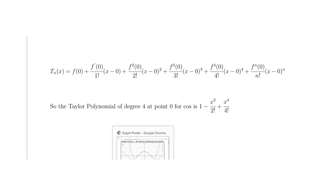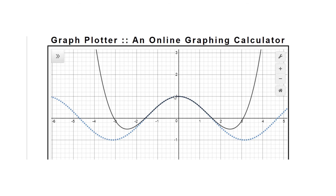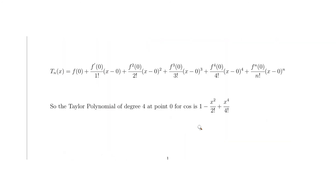To verify the result, we can look at a graph. At x equals zero, both curves center around 1, confirming accuracy at our point of interest. The solid black line is our Taylor polynomial and the dotted line is the real cosine graph. They stay very close near zero and through about plus or minus pi over 2, but begin to separate beyond that range.